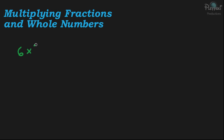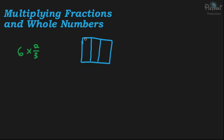Six times two-thirds. What we're saying is we have something that's two-thirds. So if this is a whole and we have two-thirds — if we have two-thirds of something, it looks like this. And if we want to multiply this by six, we have this whole here, and we have two-thirds. Let's multiply it by six.